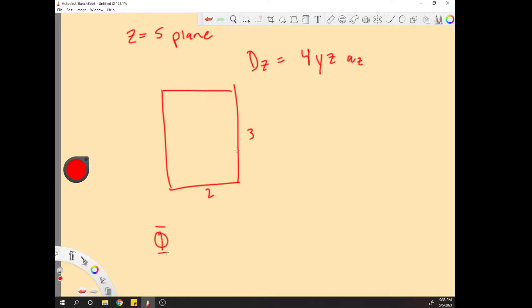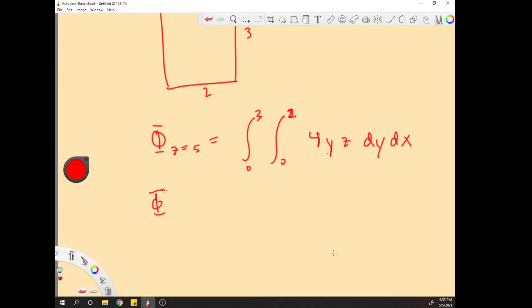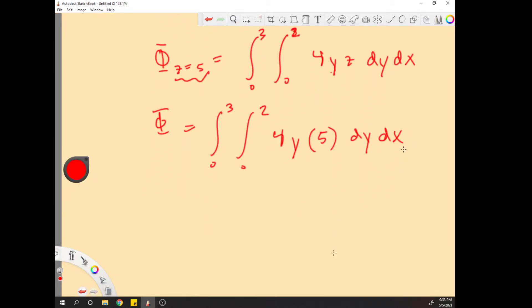And then we do phi z equals five is equal to the integral zero to three, zero to two, 4yz dy dx. We know that z is equal to five, so we plug in our five for z, and then we have a simple integral. All you're doing is solving this integral and you will get 180 coulombs.